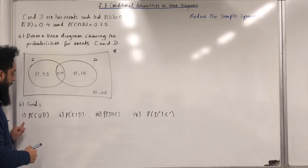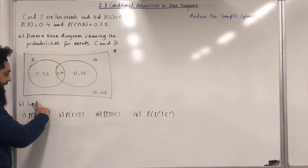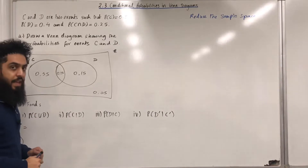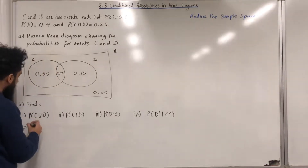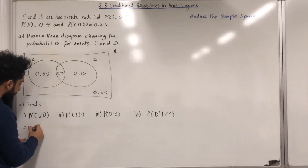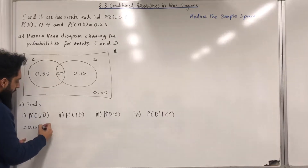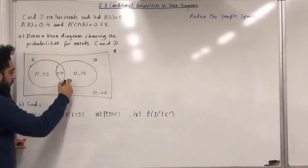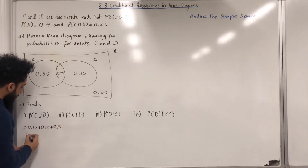Part B, part 1: probability C union D. That represents the whole of C and the whole of D. So 0.55 plus 0.25 plus 0.15, which gives us 0.95.